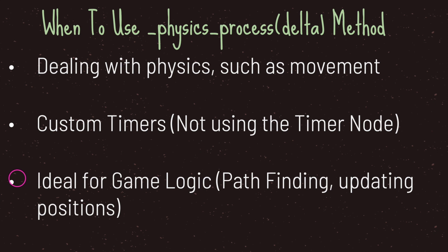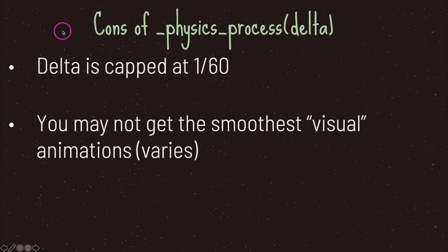It is preferable to have code logic inside physics process for performance reasons. The negatives are that the delta constant is kept at 1/60, so if you need to update something at the fastest possible rate you may want the process virtual method instead. Also, physics process may not offer the smoothest visual animations — if animation feels sluggish with physics process, consider moving that logic to process.